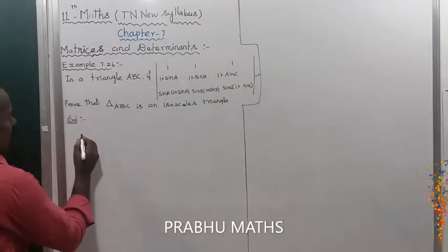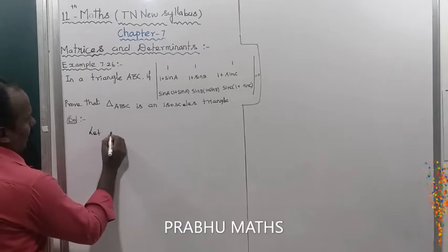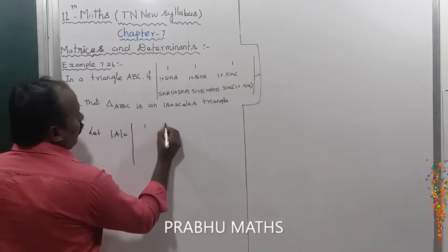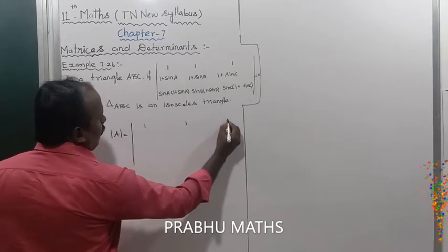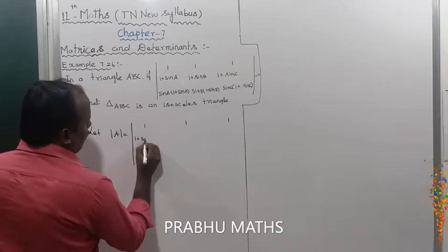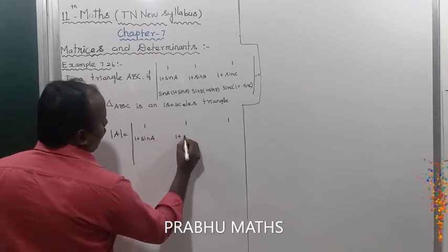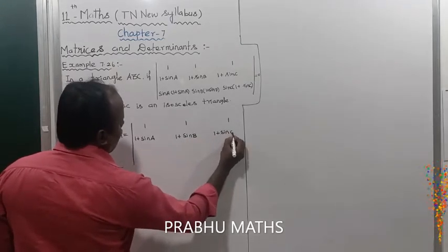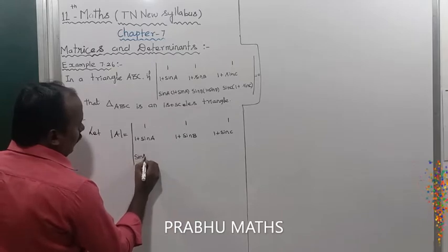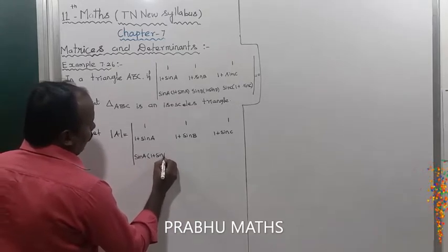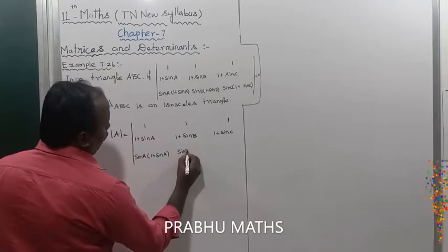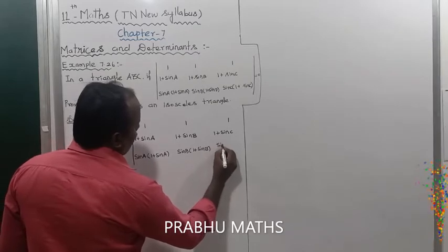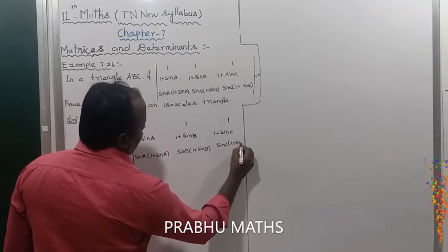The given values: let us take the determinant of A, which is equal to the determinant of the matrix with entries: first row [1, 1, 1], second row [1 + sin A, 1 + sin B, 1 + sin C], third row [sin A(1 + sin A), sin B(1 + sin B), sin C(1 + sin C)].